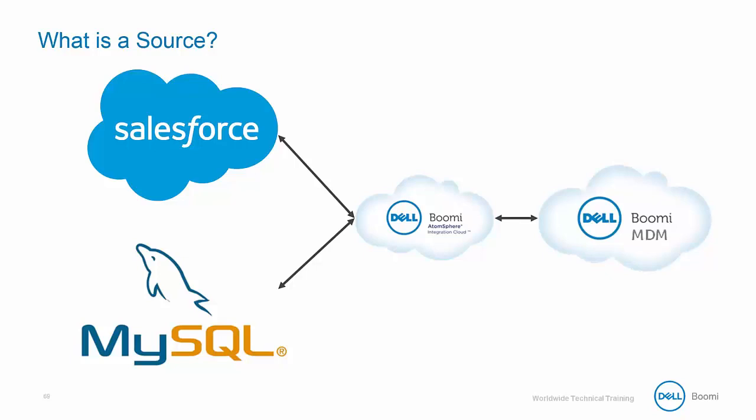Now that our model is deployed to our repository, we need to set up our sources. A source is an entity representing a system, such as Salesforce or MySQL, that contributes to master data and/or accepts updates of master data. We will be setting up two processes that will connect to a single source, transform the data, and send it to our MDM repository.